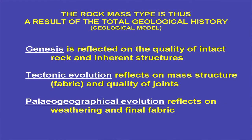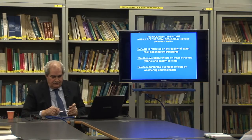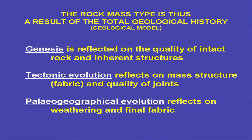All elements of the rock mass — the intact rock, the fabric, and the discontinuities — depend on geological history. The geological background is always there. Genesis is reflected in the quality of the intact rock and inherent structures. Tectonic evolution gives the fabric and quality of joints. Recent paleogeographic evolution reflects on weathering and the final fabric.